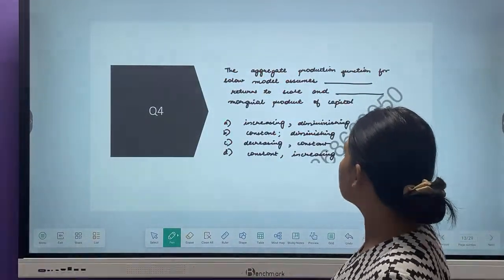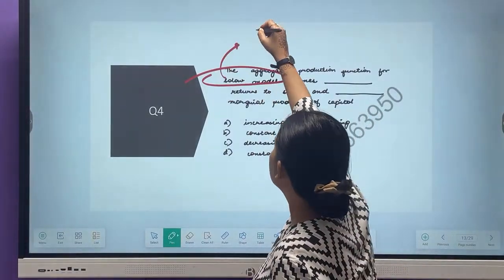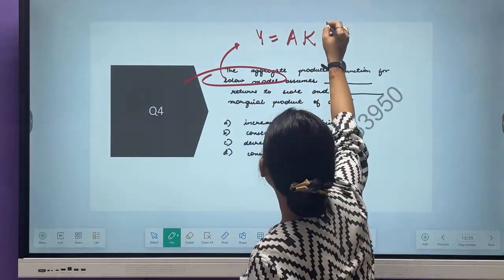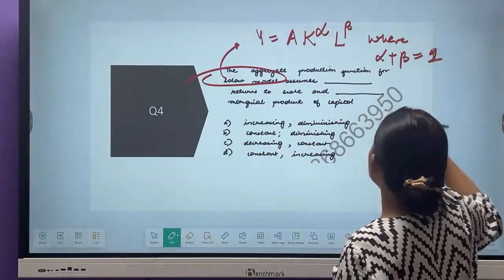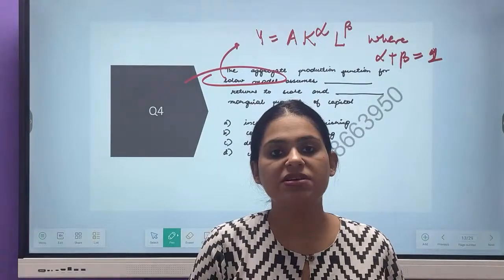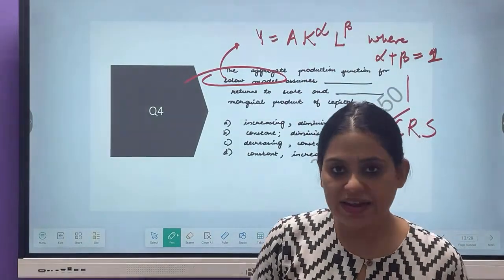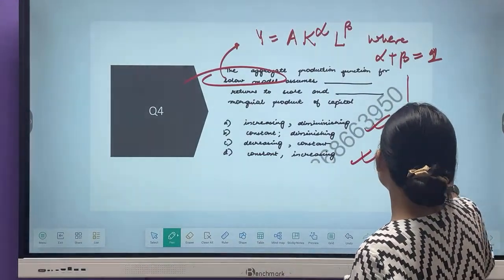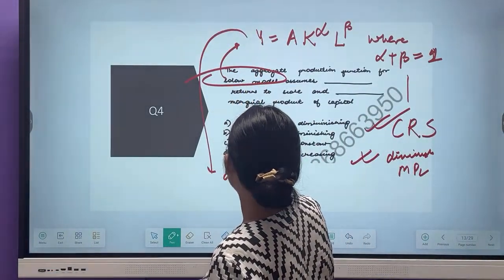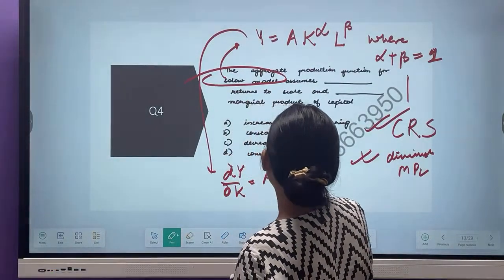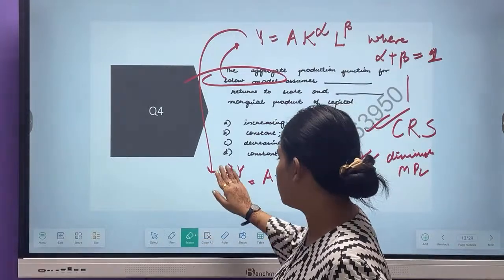Next question: The aggregate production function for Solo model. The Solo model production function is of this format: Y is equal to A K to the power alpha, L to the power beta, where alpha plus beta is equal to 1. So it is a constant returns to scale production function, and the property is that you have diminishing marginal products.